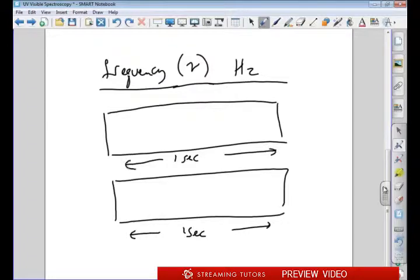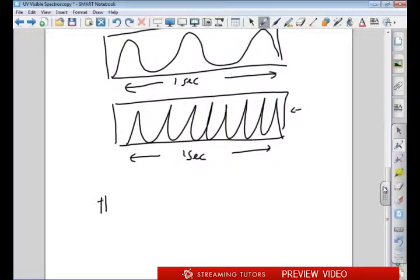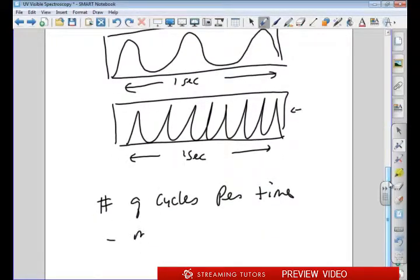If we look at something like this and compare it to something like this, notice that within one second, the cycles are more frequent. It occurs more frequently. So it's the number of cycles per given time. The more cycles, the higher the frequency. So more cycles equals higher frequency.